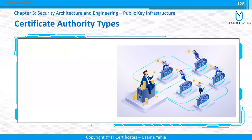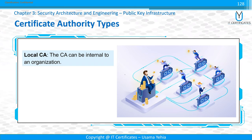Certificate authority types: Local CA. A local CA can be installed in your company. Microsoft provides a CA coming with Windows Server. If you want to create digital certificates internally for users, you can install the CA and exchange certificates. Or if you have a website requiring encryption, you can utilize a certificate from your local CA.